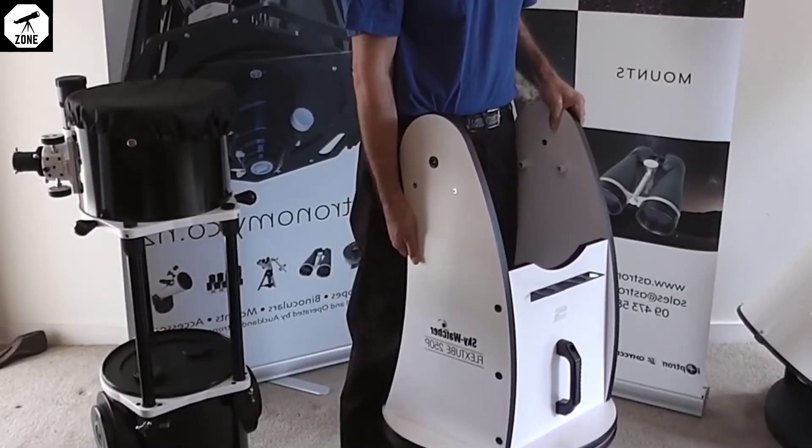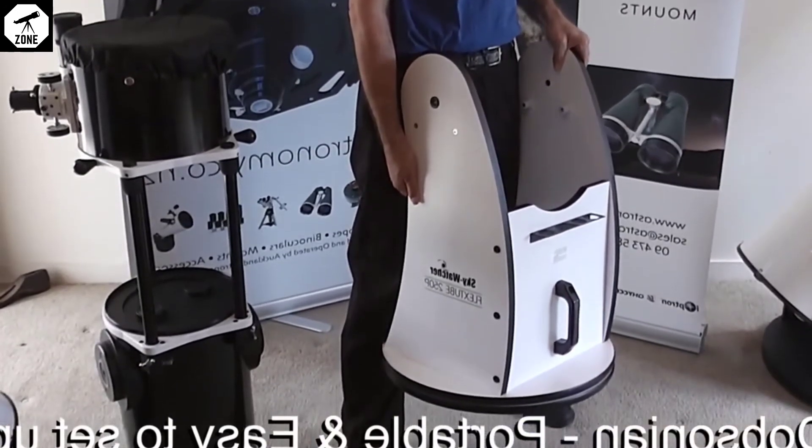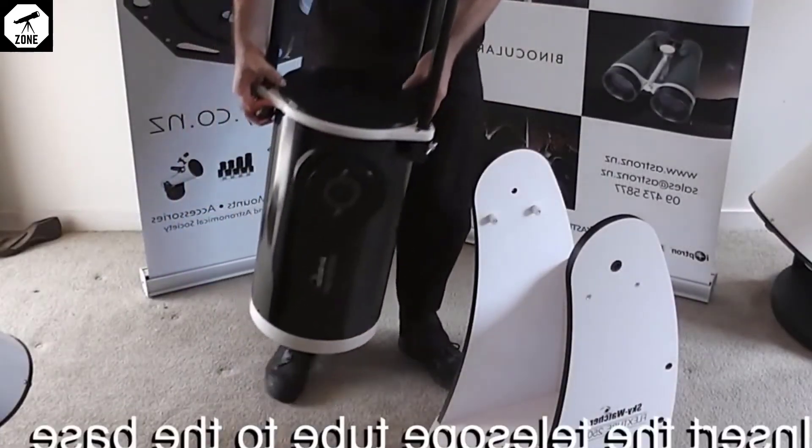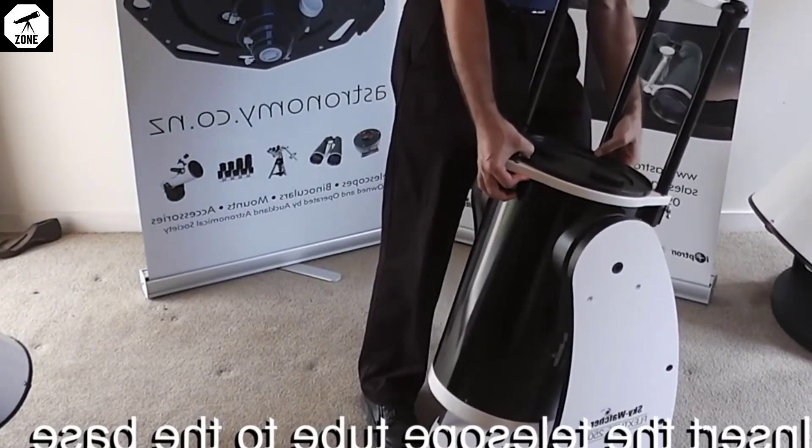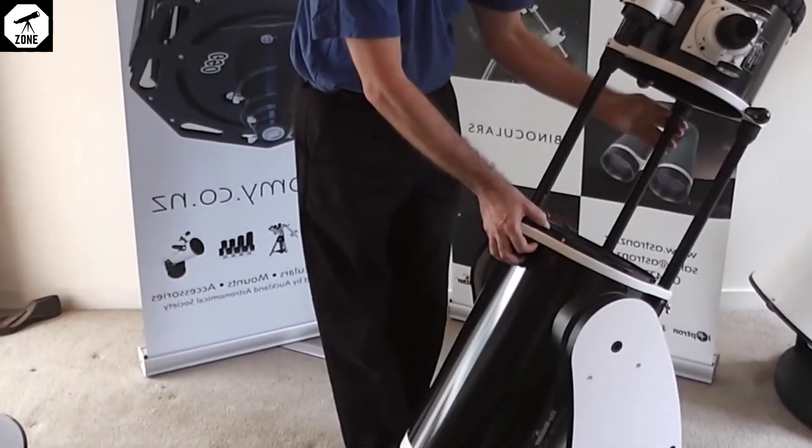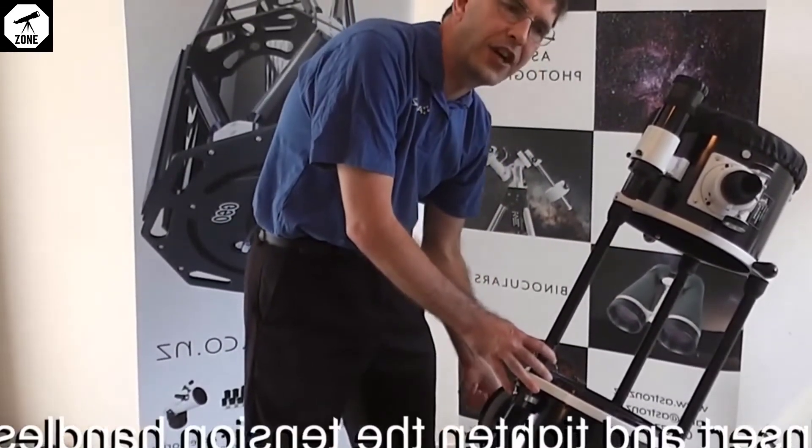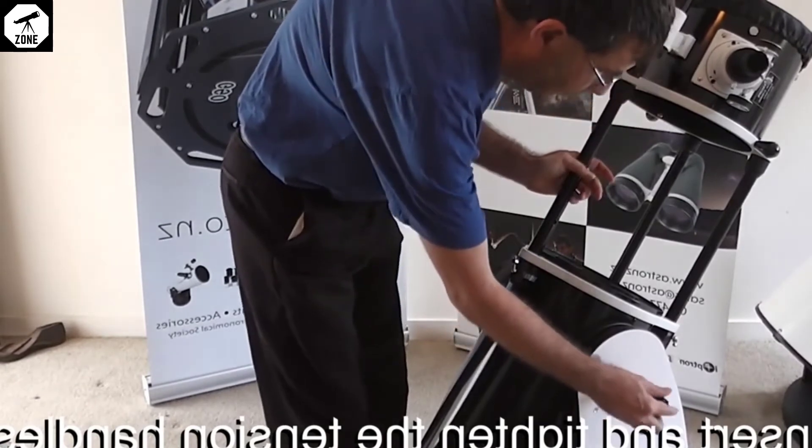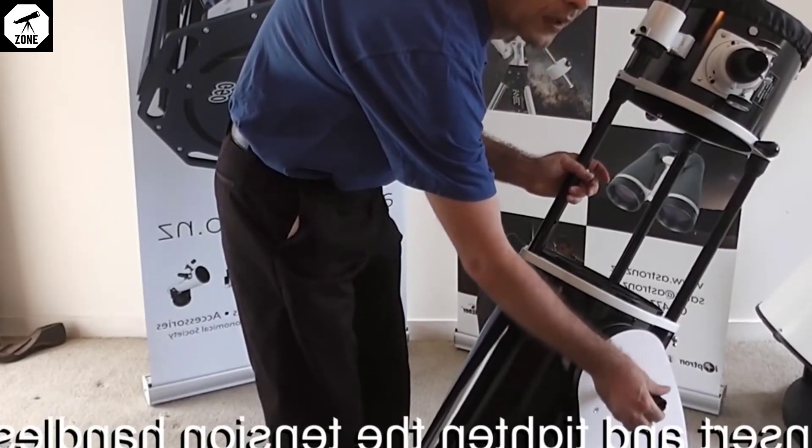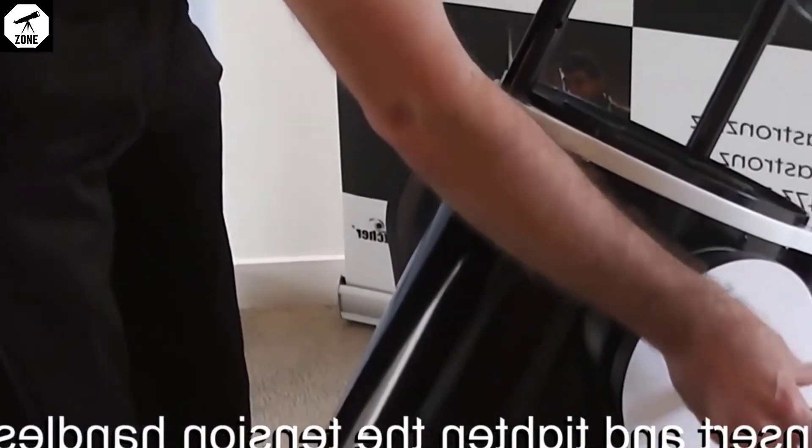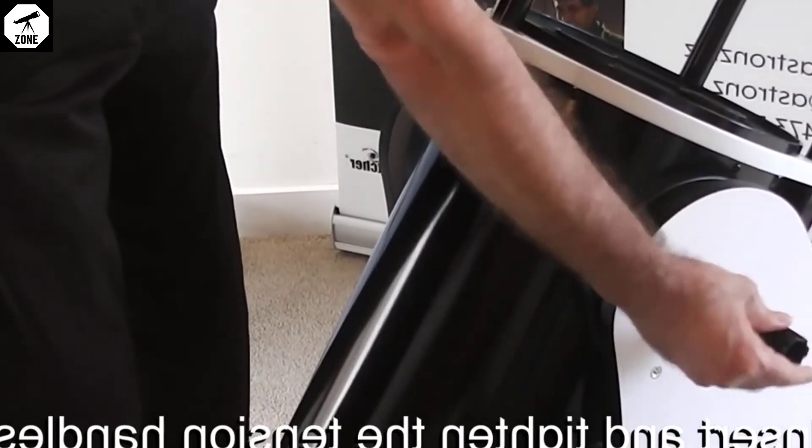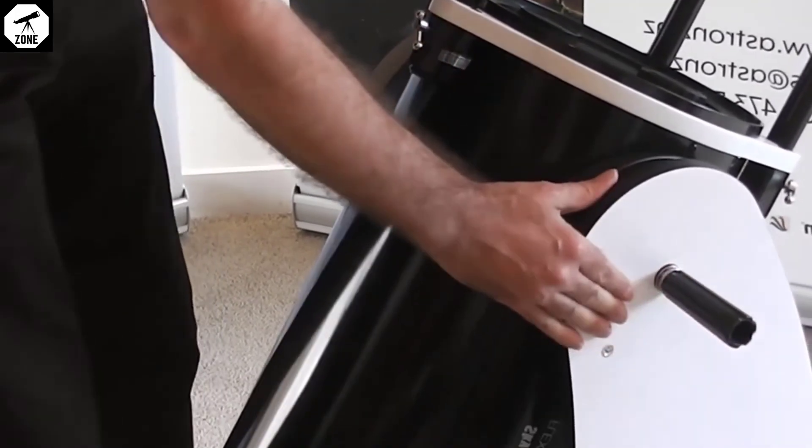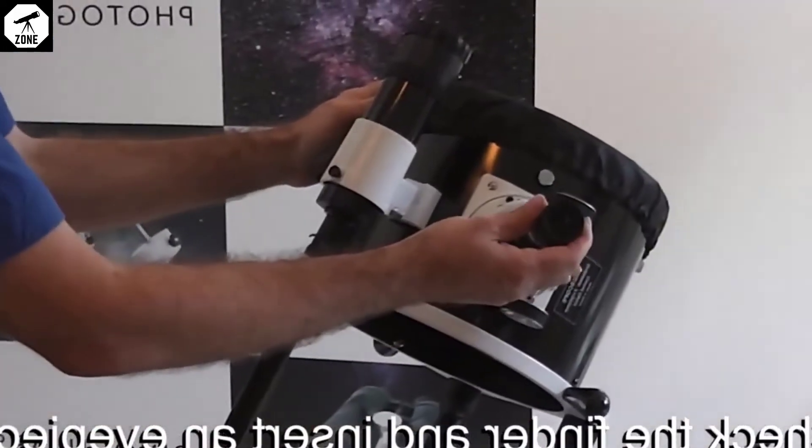The Dobsonian telescope is very portable and easy to set up. This is the 10 inch collapsible model. Place the base on solid ground. Insert the telescope tube to rest on the pads inside. Insert and tighten the tension handles. So the tension handle is not too firm. Just gripping as desired. Check your finder scope is aligned and insert an eyepiece.